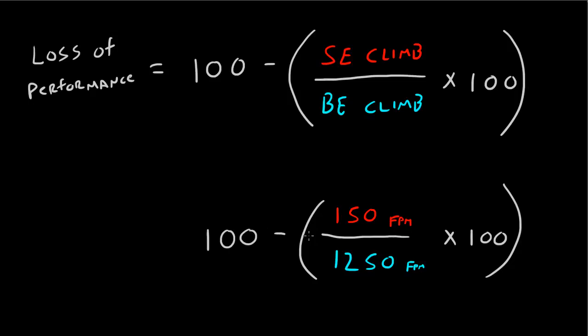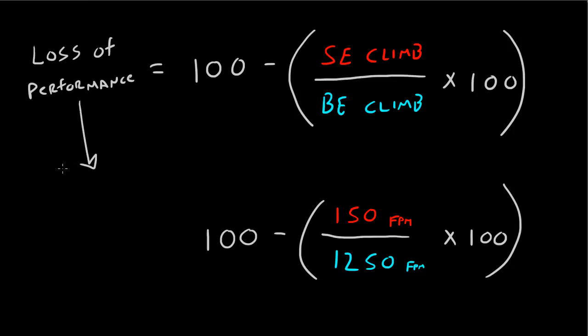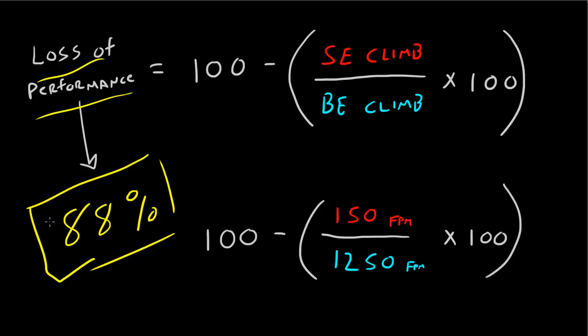Now let's figure this out. 100 minus 150 divided by 1250 times 100. Well, luckily, we've got a calculator here, and we can figure it out. So, 100 memory, and then let's see, 150 divided by 1250 equals 0.12 times 100 equals 12. Okay? So, 100 minus 12, I screwed that up, but oh well. 100 minus 12 equals 88. So what that means is your loss of performance is a whopping 88% just by losing one engine, which is a lot.